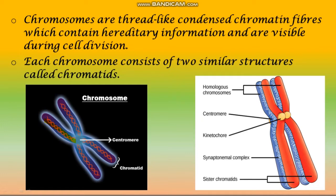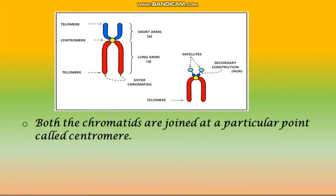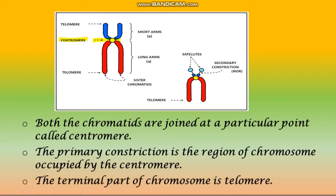Each chromosome consists of two similar structures called chromatids. Both the chromatids are joined at a particular point called centromere. The primary constriction is the region of chromosome occupied by the centromere. The terminal part of chromosome is telomere.